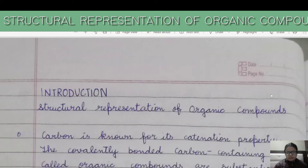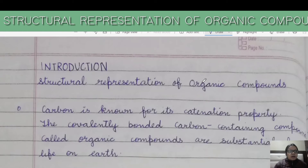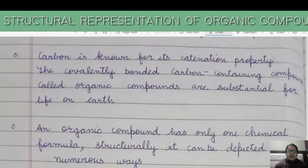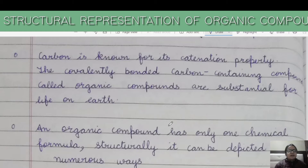Carbon is known for its catenation property. The covalently bonded carbon-containing compounds called organic compounds are substantial for life on earth — this we have already discussed. An organic compound has only one chemical formula, but structurally it can be depicted in numerous ways. Just like a person is one individual but can be represented in different ways when they change clothes on different occasions.